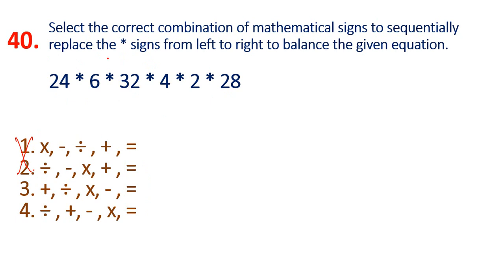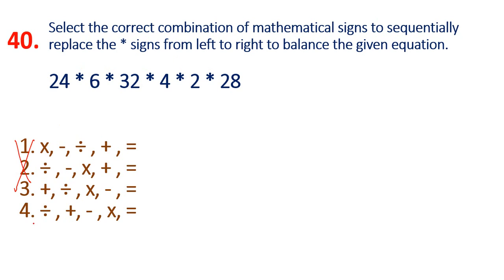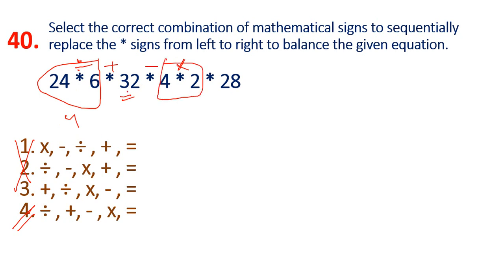Checking option 4: division here, addition, minus, multiplication. So 32 minus 8 is 24. 32 plus 4 is 36, minus 8 is 28. This is exactly right. Option 4 is the answer.